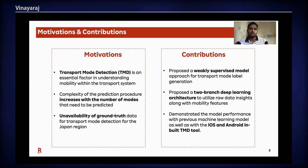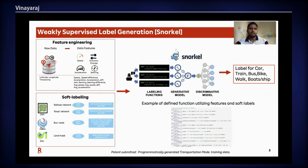We considered publicly available datasets related to road network, railway network, bus routes, etc. These datasets were used to create road, bus, and train labels by overlapping GPS points on the associated transportation network. These labels are called soft labels. Transportation network based soft labeling and other mobility features are used to define multiple labeling functions in Snorkel.